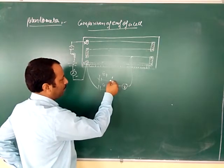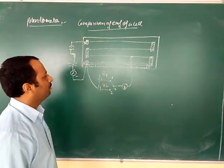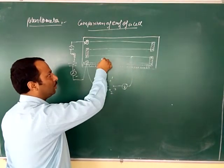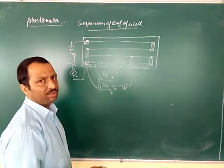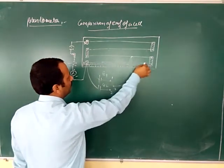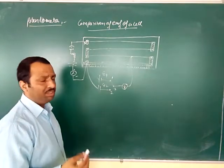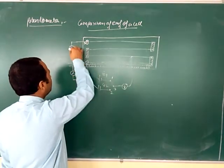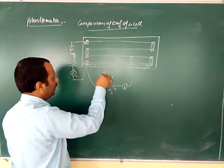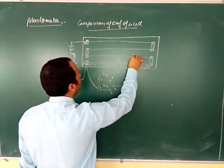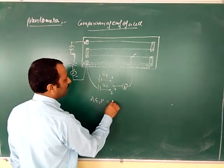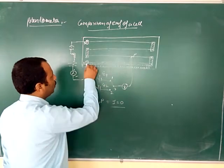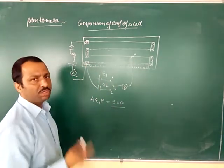We start the experiment by joining connections 1 and 3. Current flows in the circuit and, using the jockey — without rubbing it on the wire — we make contact to find the null point. We start from the initial length and search along the potentiometer wire to find the null point. Suppose at a certain point the galvanometer shows no deflection. No deflection means no current is flowing in the arm from A to P through E1; that is why the galvanometer is not showing any deflection.